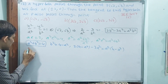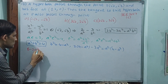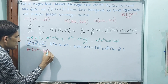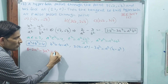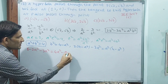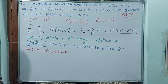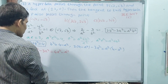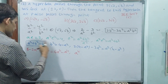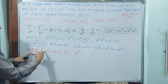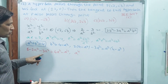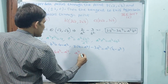Now solve this. Expanding: 8 minus 2a squared minus 3a squared equals 4a squared minus a to the power 4. Bringing all terms to one side: a to the power 4 minus 4a squared minus 3a squared minus 2a squared, that is minus 9a squared, plus 8 equals 0. Wait — a to the power 4 minus 9a squared plus 8 equals 0.